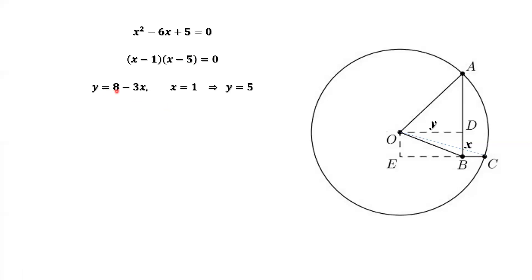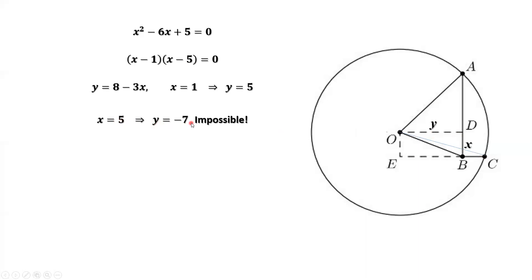Since Y equals 8 minus 3X, we replace X by 1, then we have Y equals 5. If we replace X by 5, this implies Y equals negative 7. By definition, Y is a distance and cannot be negative. Therefore, X equals 5, Y equals negative 7 is not a valid set of solutions. The only solution is X equals 1, Y equals 5.